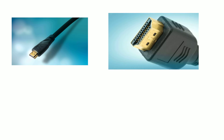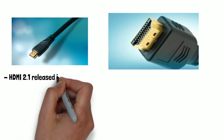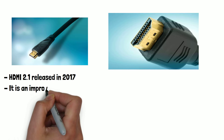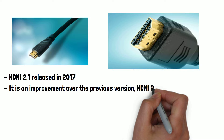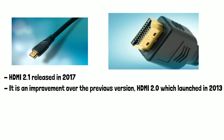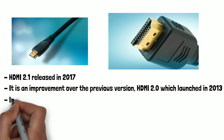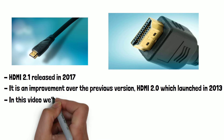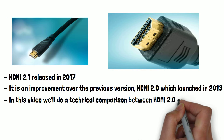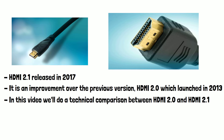HDMI 2.1 is the latest version of the HDMI standard, which was released in 2017. It has an improvement over the previous version, HDMI 2.0, which launched in 2013, and offers several new features and enhancements. In this video, we'll do a technical comparison between HDMI 2.0 and HDMI 2.1.